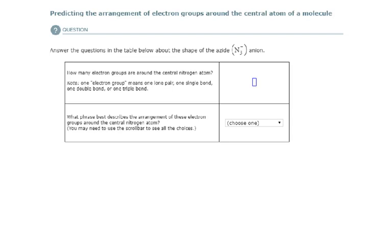Alright, so here we have the azide anion, and we need to draw its Lewis structure. We have 5, 10, 15, 16 valence electrons to work with, and I'm doing this in my head now. We've had practice with this.